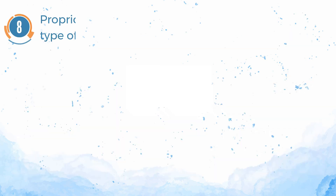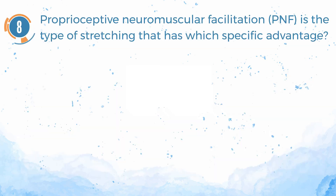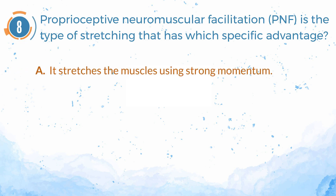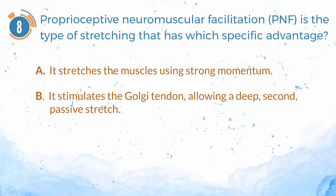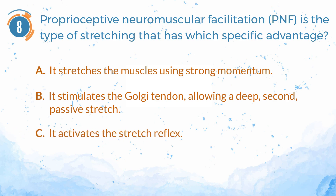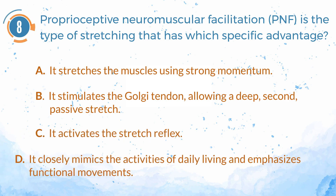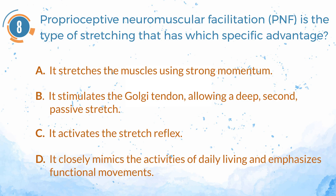Number 8. Proprioceptive neuromuscular facilitation (PNF) is the type of stretching that has which specific advantage? A. It stretches the muscles using strong momentum. B. It stimulates the Golgi tendon, allowing a deep second passive stretch. C. It activates the stretch reflex. D. It closely mimics the activities of daily living and emphasizes functional movements.